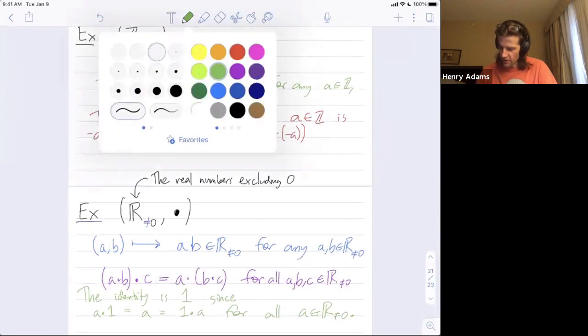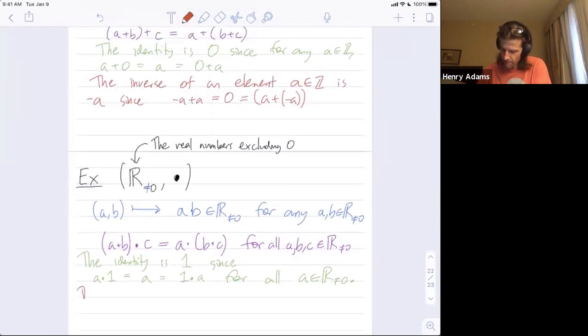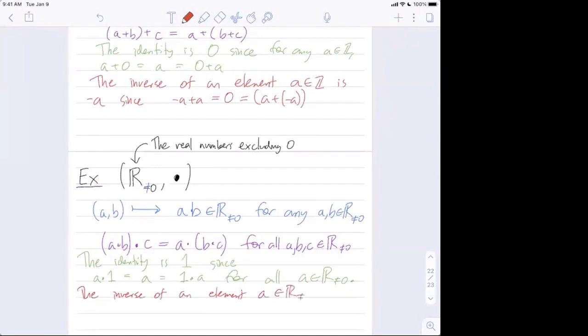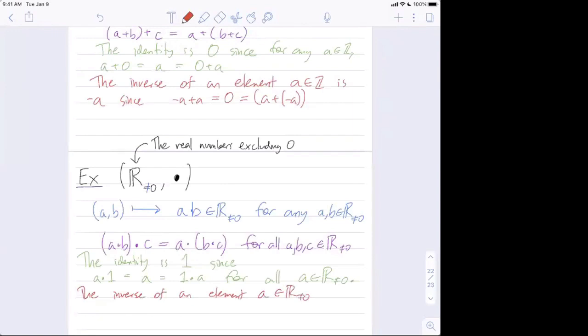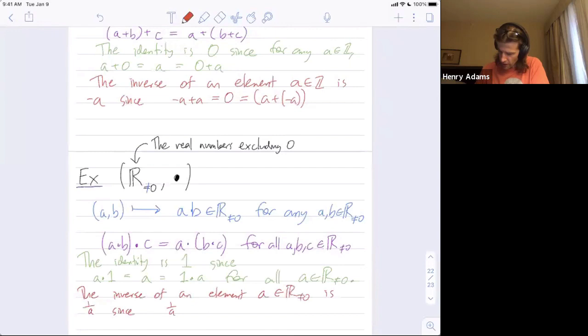And then what is the inverse of an element a? Itself. That's not quite right, the inverse of element is not quite itself, it's one over itself. One over a. Yeah one over a. Since if I combine one over a with a I just get the identity in either order. So one interesting point is you need to figure out what the identity is before you can look for inverses.